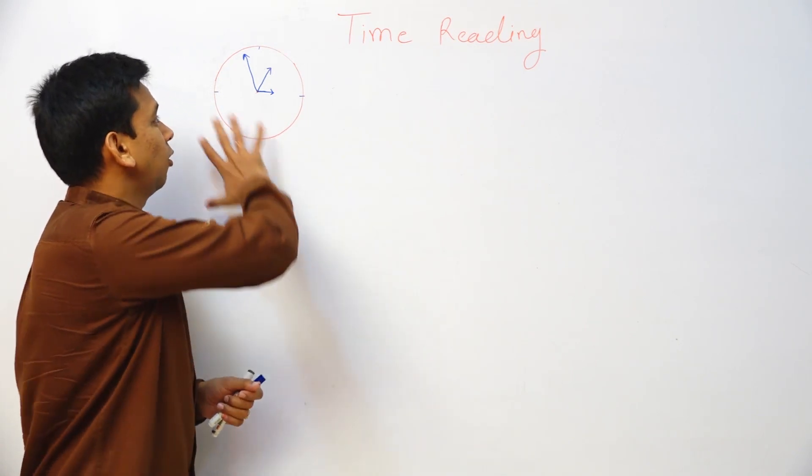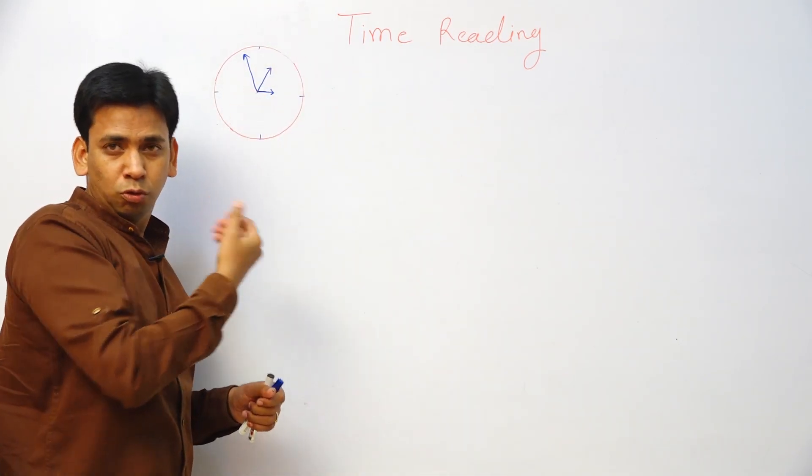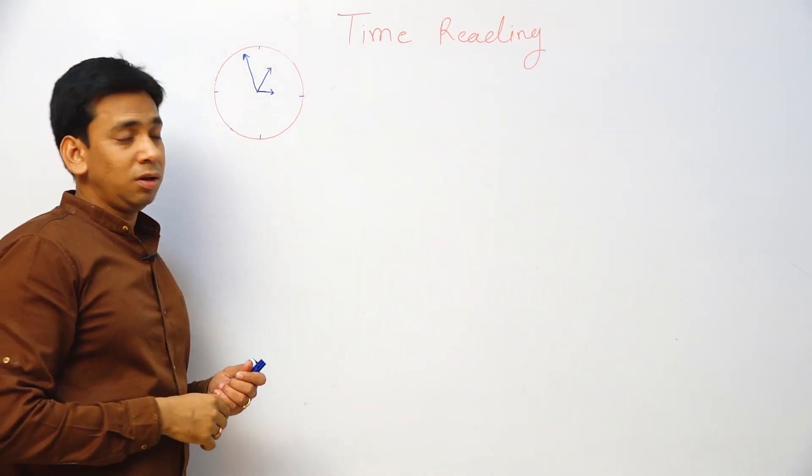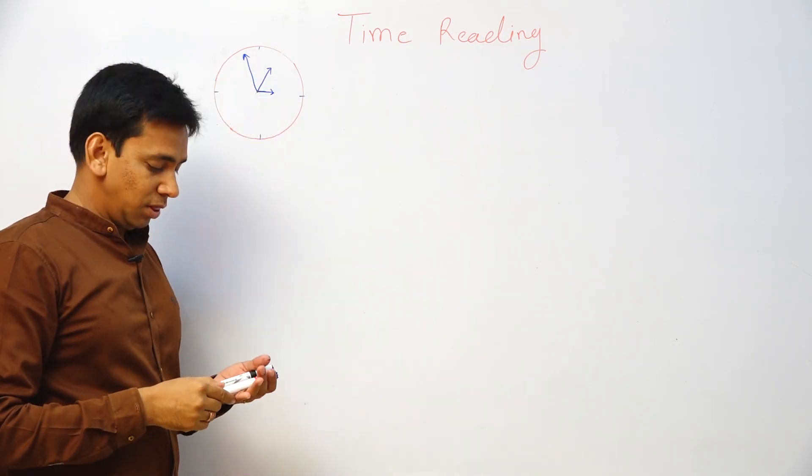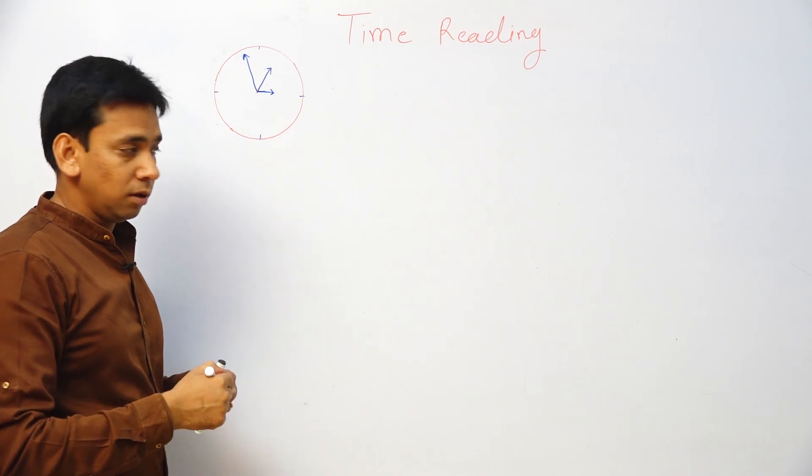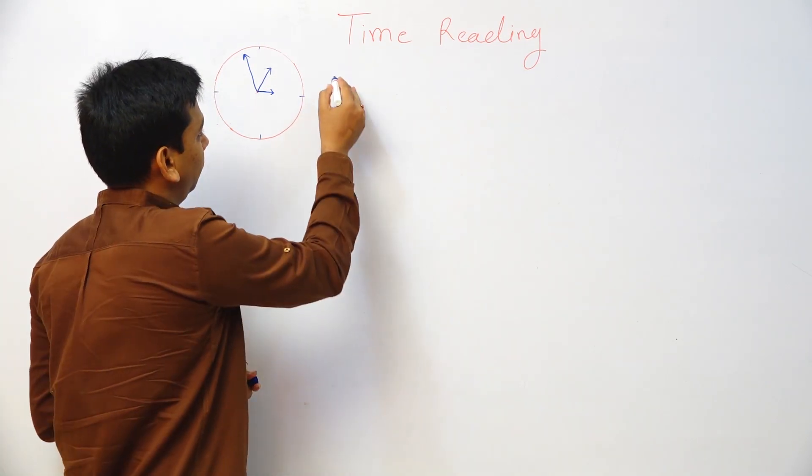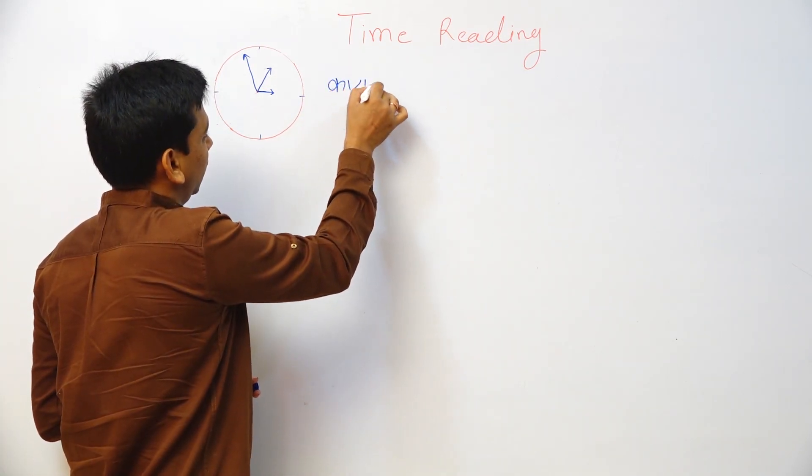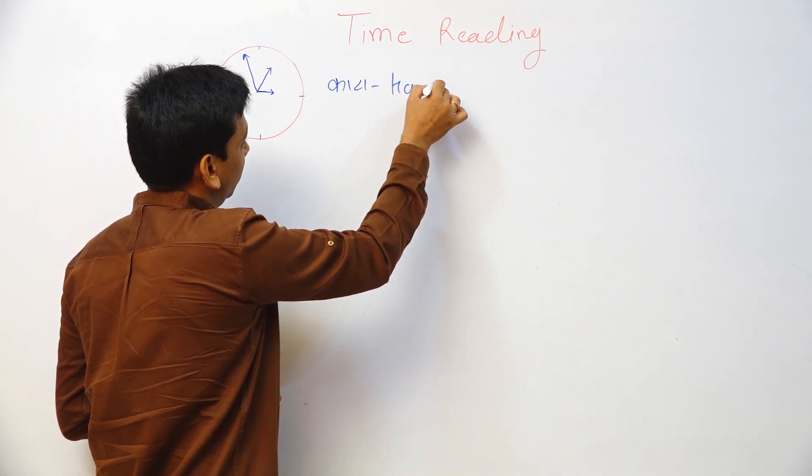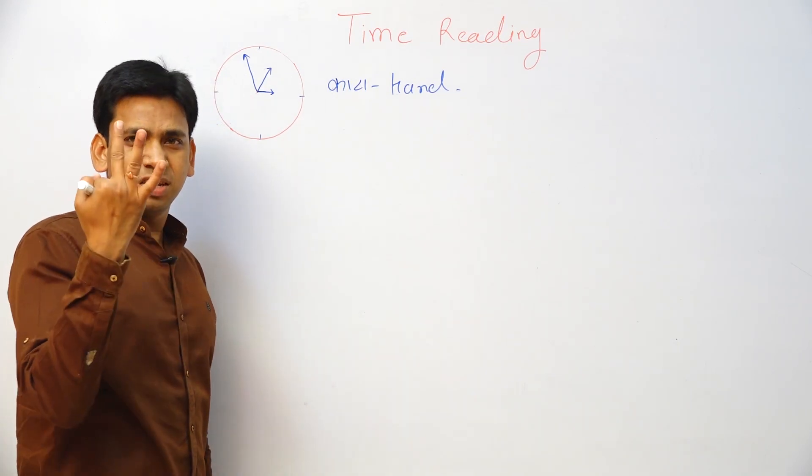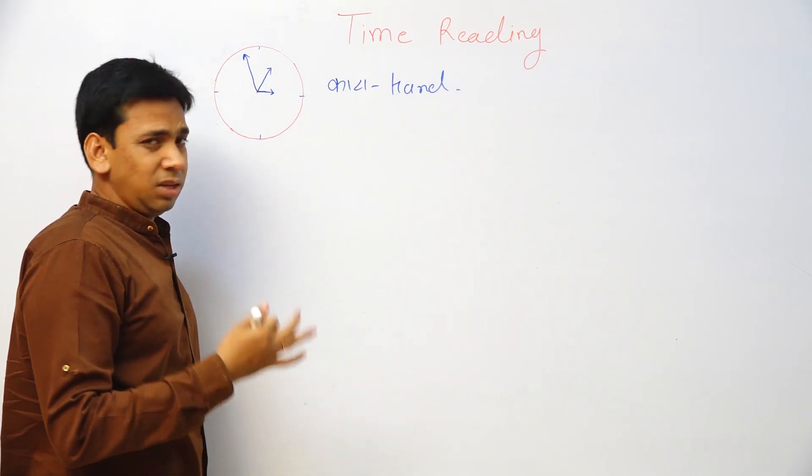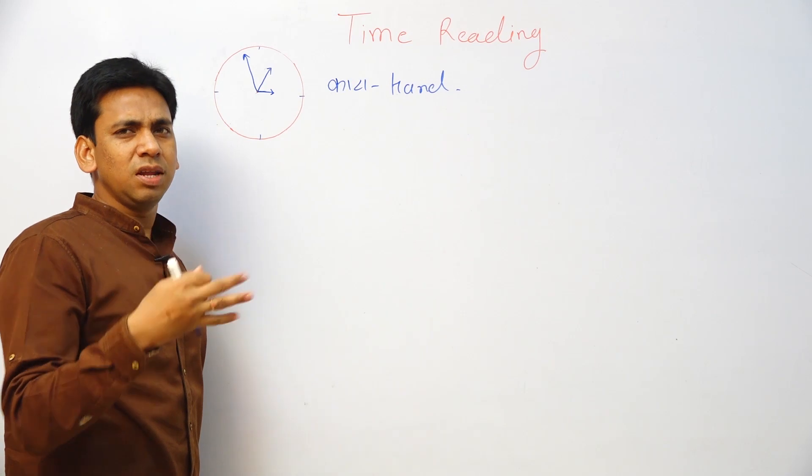See, this is the clock. It is called a clock. How many hands are there? We call it as hand. How many hands? We call it as hand.